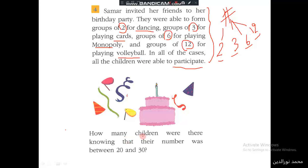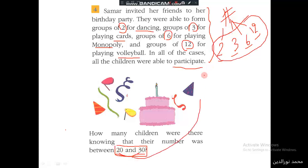Then, how many children were there, knowing that their number was between 20 and 30? So the question here is: what is the number of friends, given the condition that the number of friends is between 20 and 30?